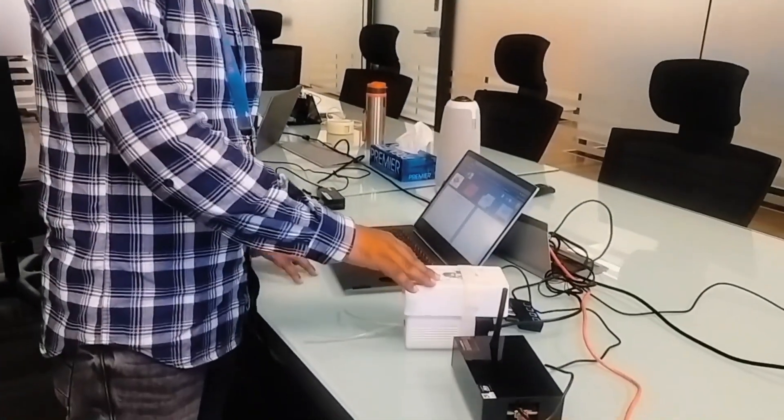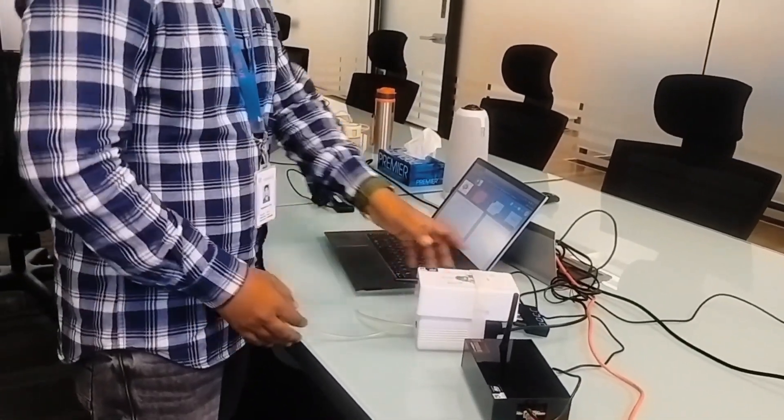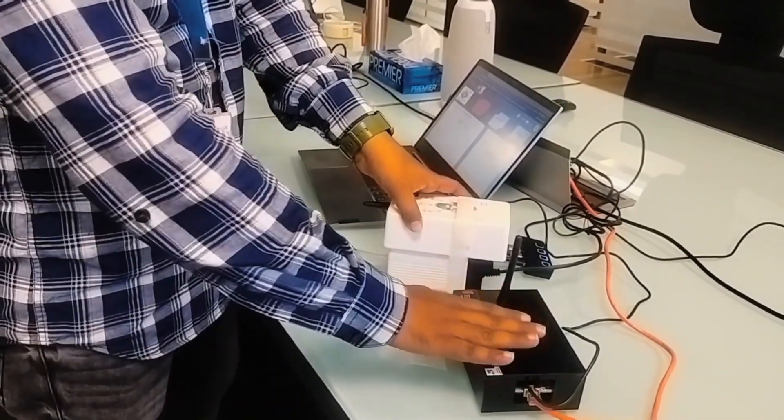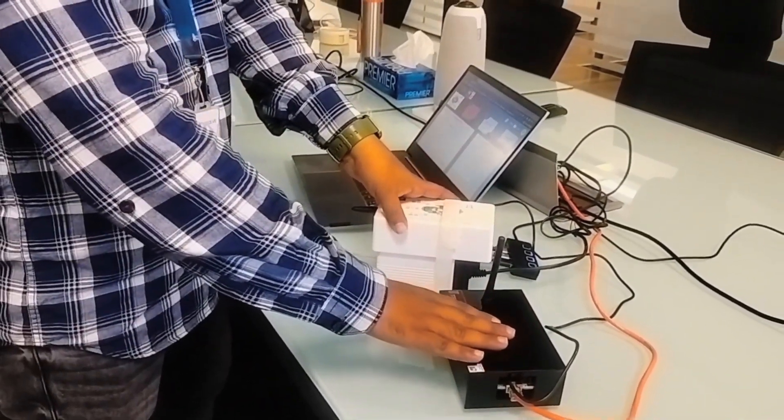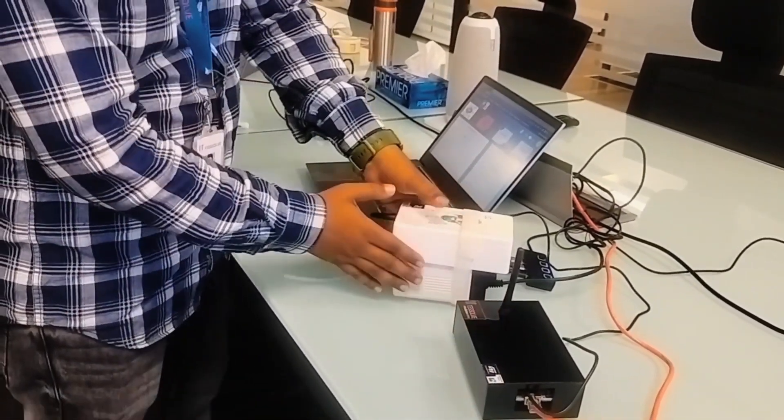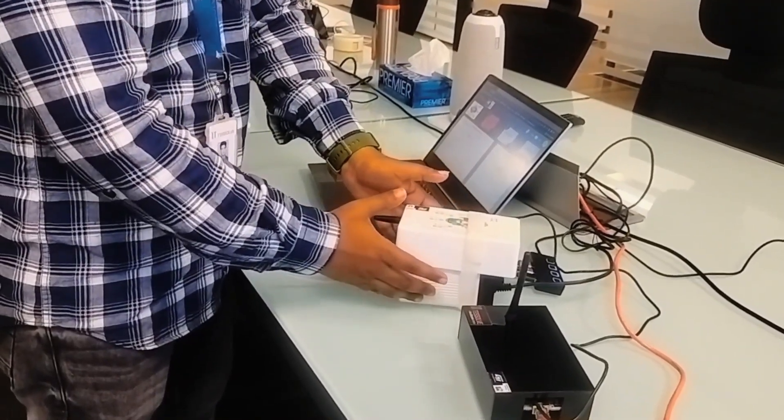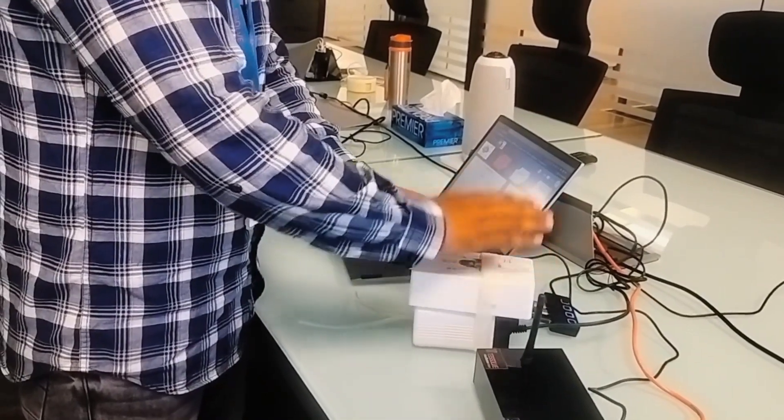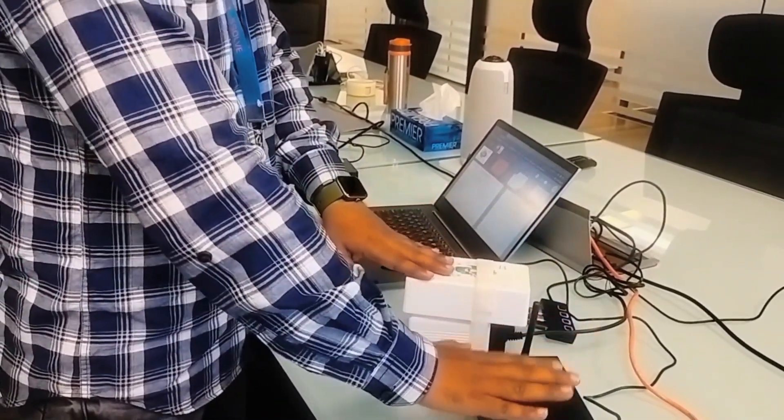Now we are going to see the working demo of this predictive maintenance. This is the predictive maintenance demo kit, and this is a motor, and this is the LoRaWAN gateway. If any abnormality happens in this motor, that will be sensed or detected by this demo kit, which will be wirelessly sent to this LoRaWAN gateway.